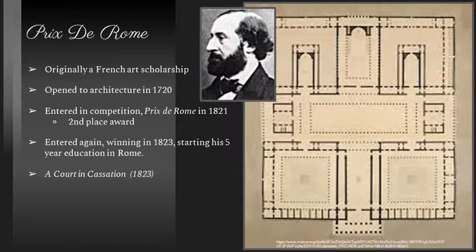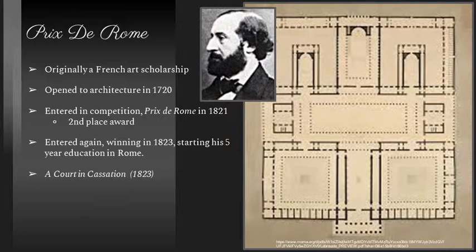The Prix de Rome was originally a French scholarship, but more for the arts — not necessarily architecture. The initial winners were fine arts students, painters and sculptors. It opened to architecture in 1720. In 1821, Labrouste initially entered the competition and got second place, then entered again in 1823 after his apprenticeship, after which he started his five-year education in Rome.